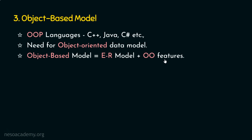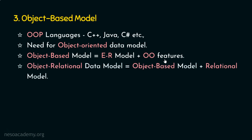We also have a variation of the object-based data model, which is the object-relational data model. This object-relational data model is the combination of the object-based model along with the relational model — the first data model we saw. When the object-based model is combined with the relational model, we get the object-relational data model.